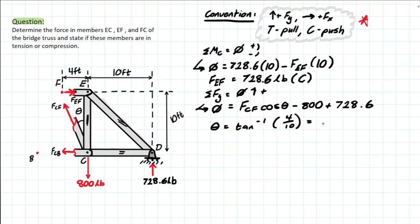And you'll be left with 76.9 pounds. And the sign is positive, which means our assumption is correct, which also means that this will be in tension because we are pulling away from that C joint that is still existing on the side of our cut.